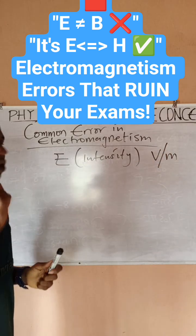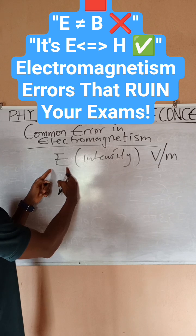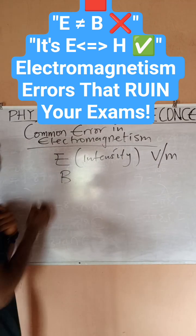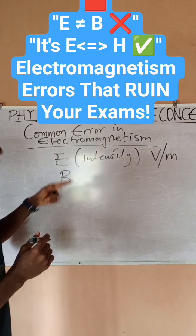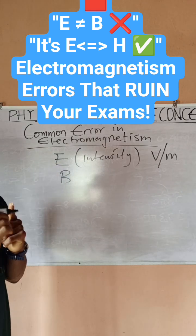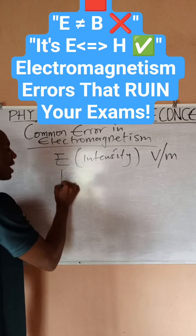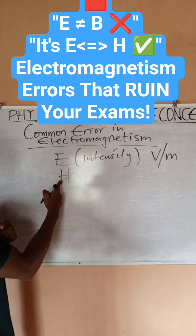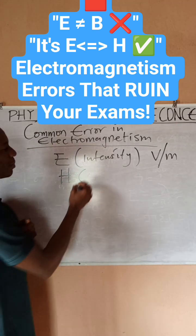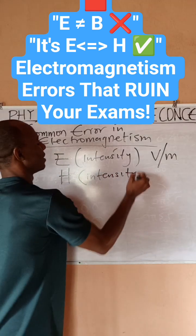The second thing students confuse is that they think the equivalent of E in the magnetic field is B. Well, B is not the exact equivalent of E in the magnetic field. The exact equivalent of E in the magnetic field is actually H. H represents magnetic field intensity.